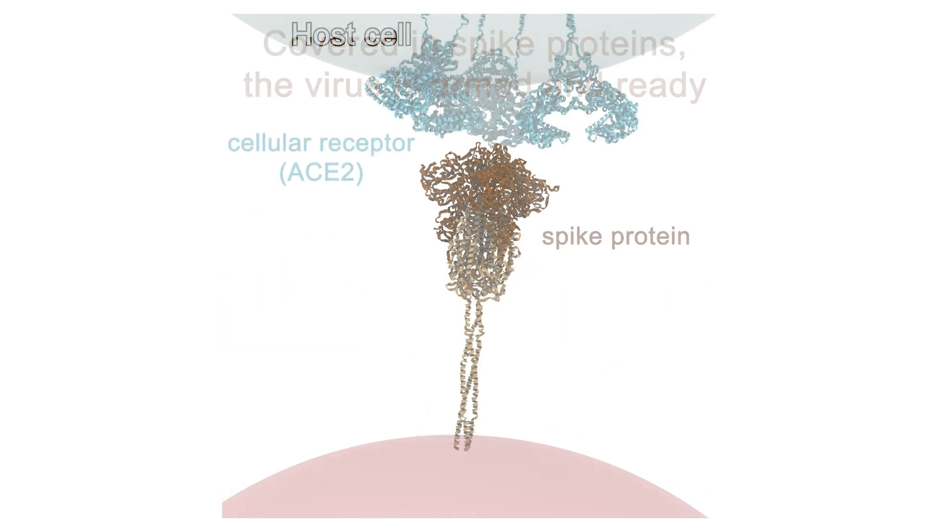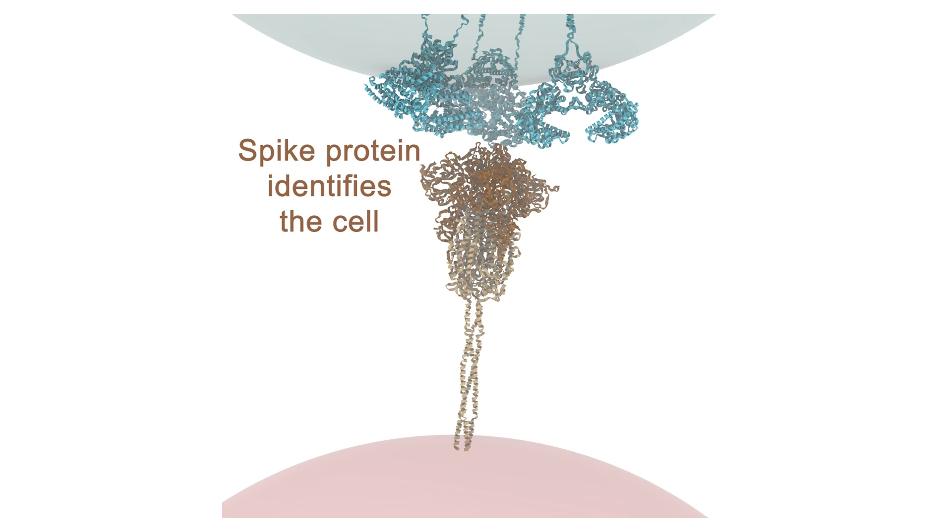First, the virus approaches the cell and recognizes the ACE2 receptor. To do this, the protein undergoes a rearrangement that allows it to bind.